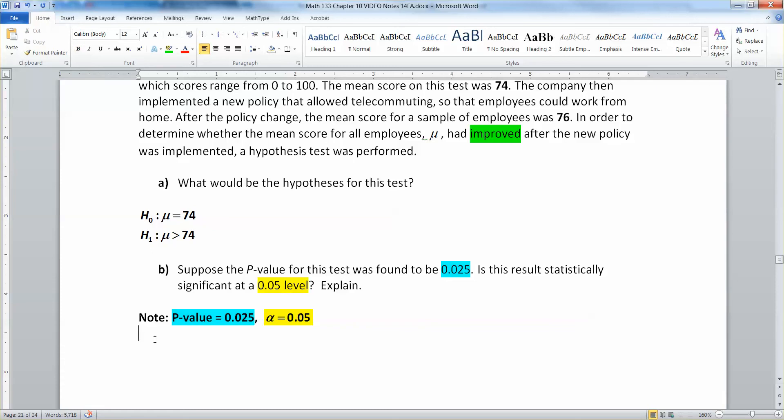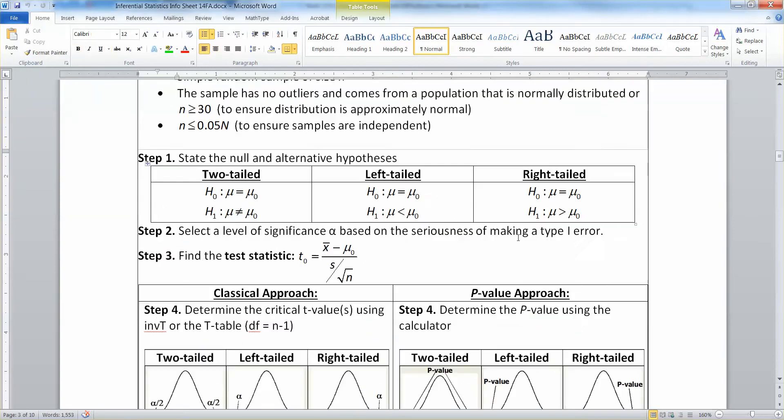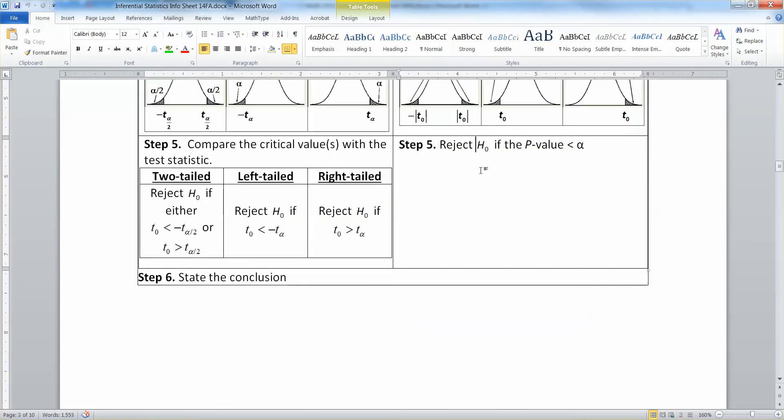Explain. Alright, so if your p-value is less than your alpha, you reject the null hypothesis. Just as a reminder, I've called up the inferential statistics sheet here. You reject H₀ if your p-value is less than your alpha.